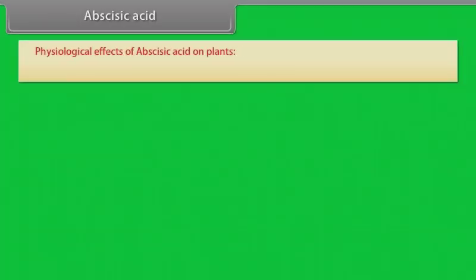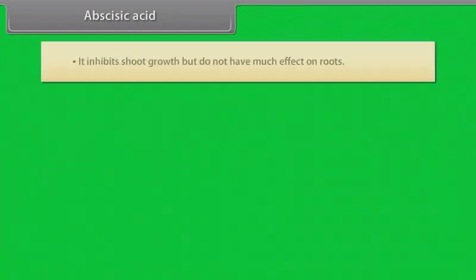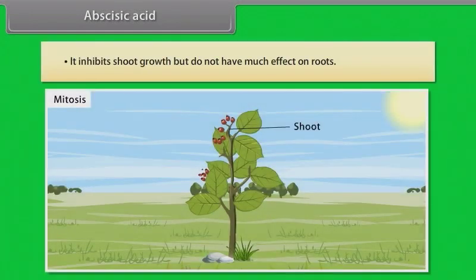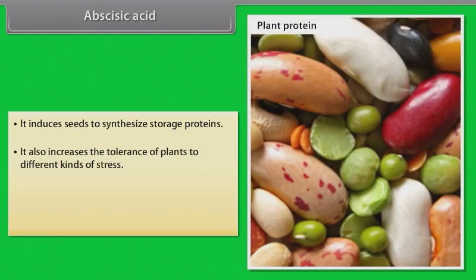Abscisic acid. Physiological effects of abscisic acid on plants. It acts as a stress hormone as it stimulates the closure of stomata. It inhibits shoot growth but does not have much effect on roots. It induces seeds to synthesize storage proteins. It also increases the tolerance of plants to different kinds of stress. It acts as antagonist to gibberellins.